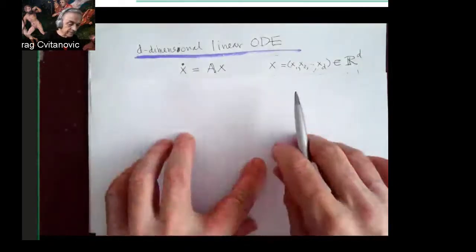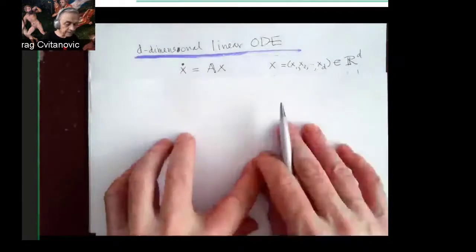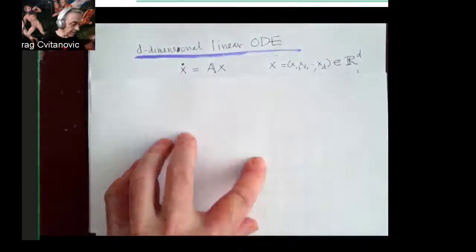...a D-dimensional linear ODE is a vector in D-dimensional space of reals. So a vector with D-components, let's say three components in our three-dimensional space.